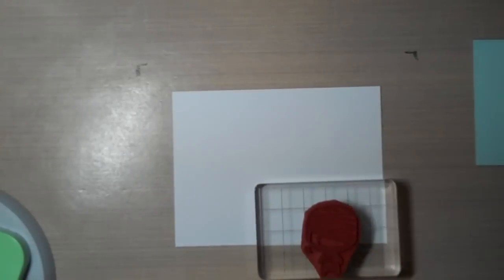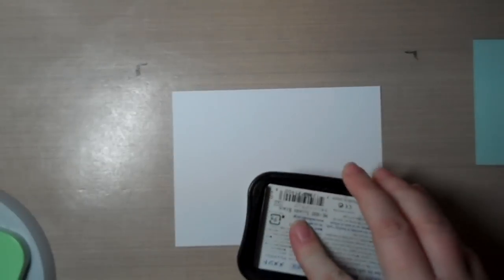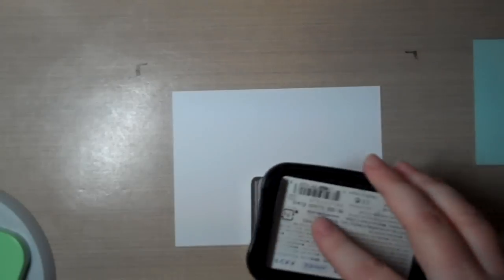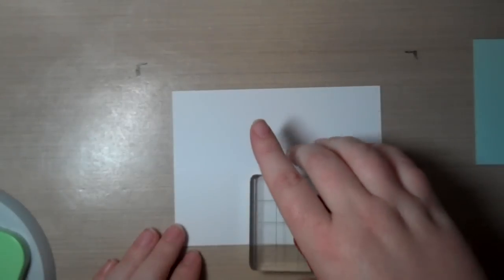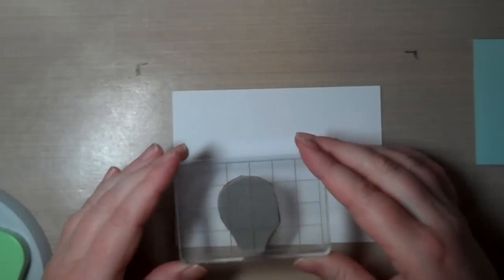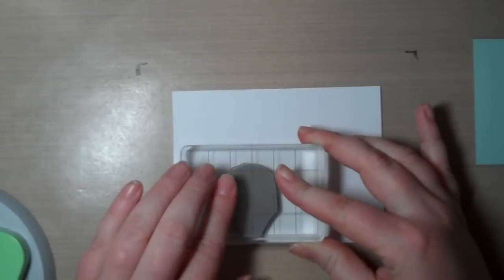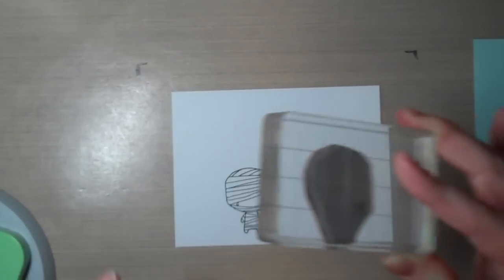I'm just going to ink up my main character first. Anything you want to be in the foreground closest to the viewer is going to actually be the first image that you stamp on there. So I'm just going to take him, put him on our cardstock and give him a good pressure.